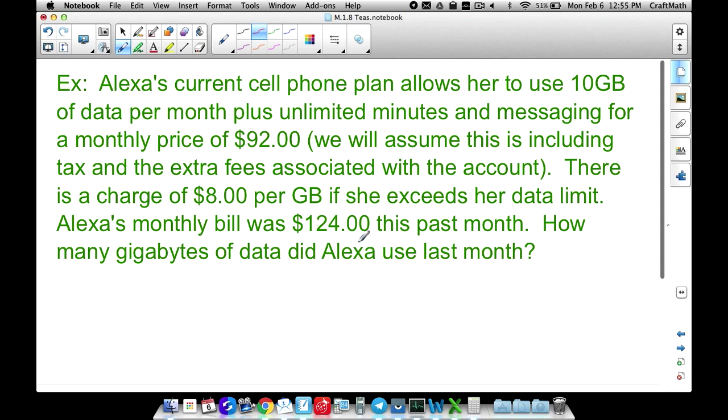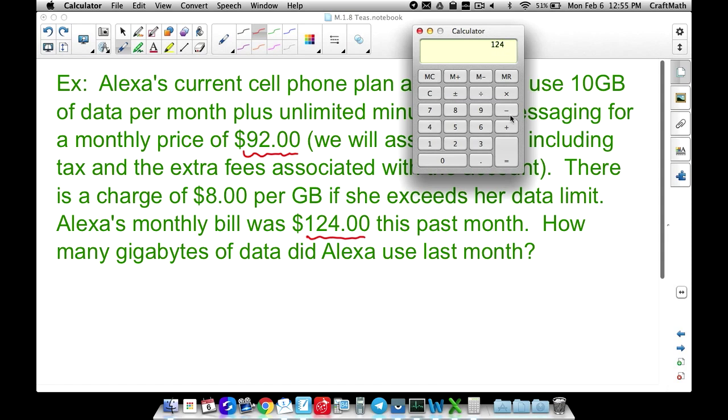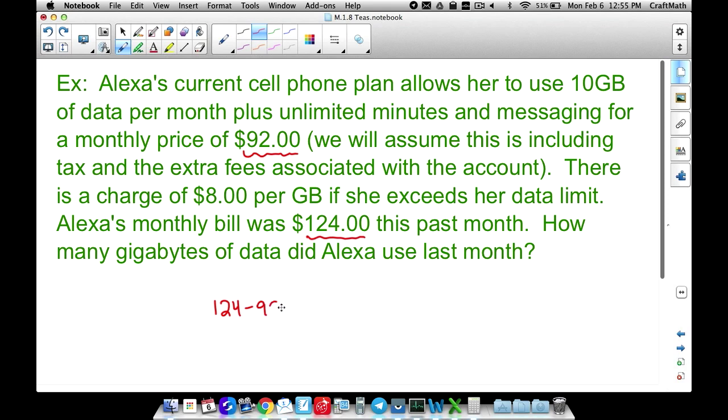Okay. Well, did she exceed her data limit? Absolutely. Because this right here, this $92, is how much she pays for 10 gigs of data, unlimited minutes, unlimited messaging. And now her bill is $124. So the best approach here is to take that $124, that was the bill that she got, subtract what it should have been had she not gone over. So $32 is what she paid extra. And all I did there was take the $124 minus the $92, that gives us $32. So this is how much money she went over. $32 over her normal bill. Well, assuming, like I said, we're not going to throw in any taxes or extra fees or anything like that. Let's just assume this $32 is all about her exceeding her data.